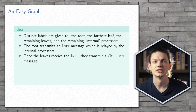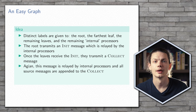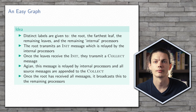Once the leaves receive the init message, they will transmit a collect message that is again relayed back towards the root. Any processor that contains a message will attach that message to the collect as it passes by. Once the root has received all of the collect messages, it can broadcast the entire package back out to the network.